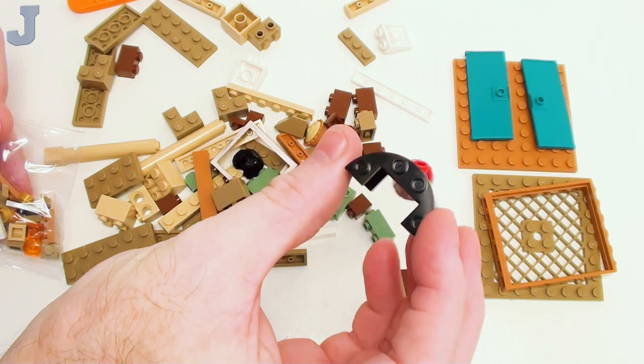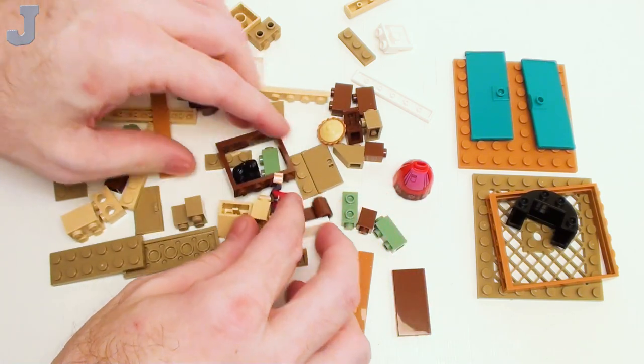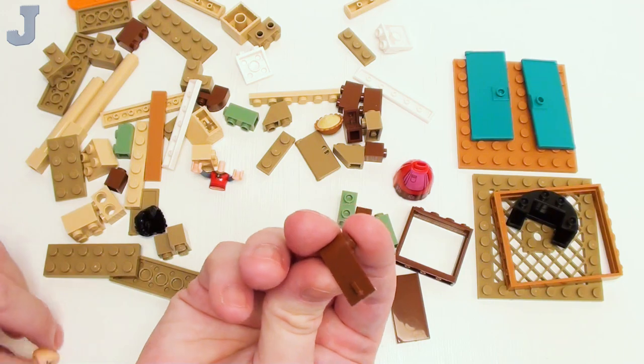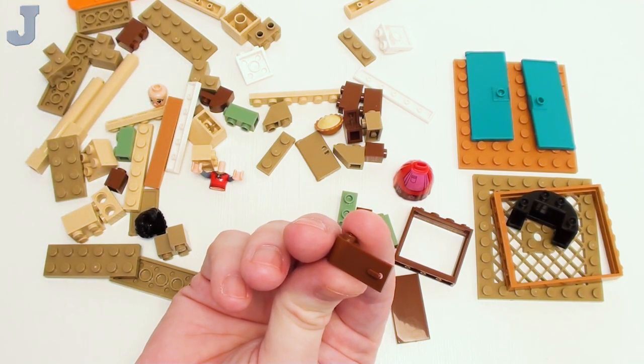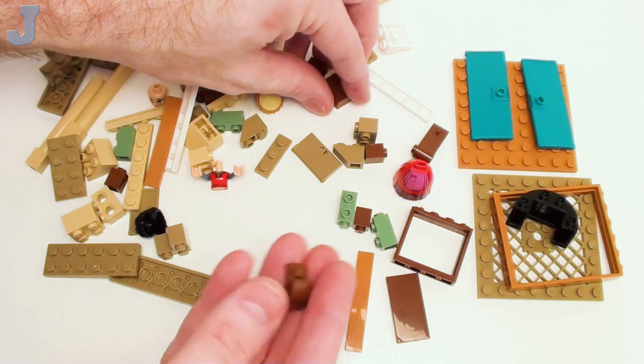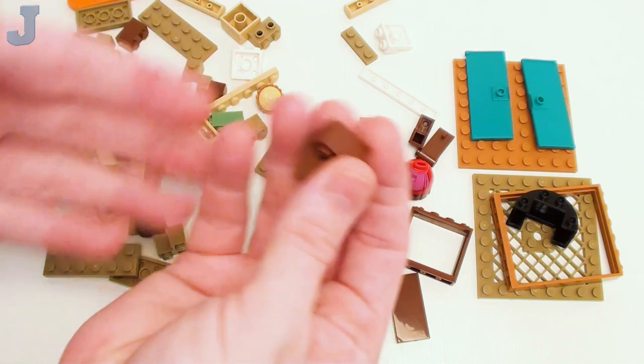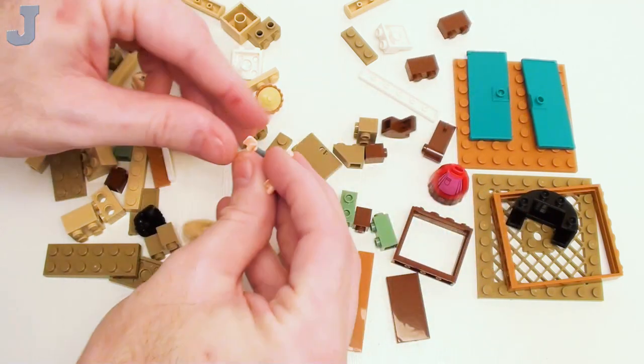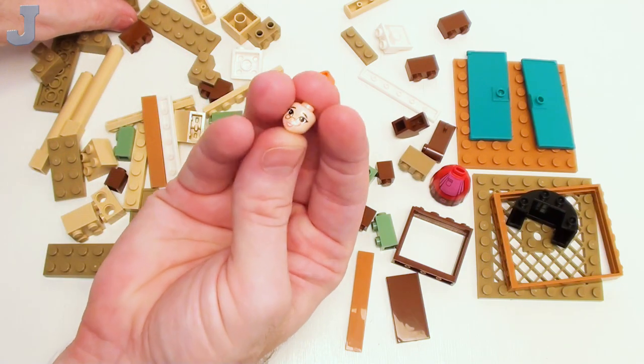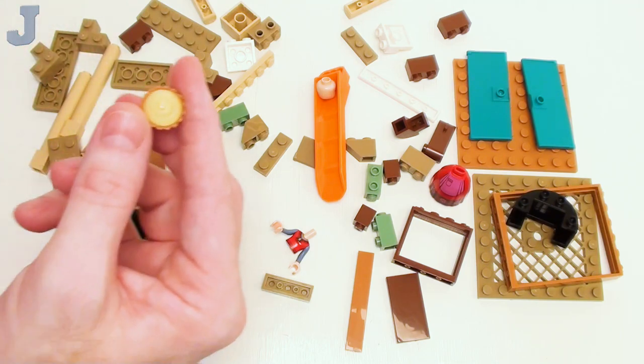And a 2x4 flat tile. A 2x4x2 half-round wall element. We've got some 1x3x4 window elements. And a brown left-handed car door. I've never seen those in a round before. And a 1x1 brick with bow. Some 1x2 bricks. We've got some hearts for the mini-doll. There's the brick separator. There's a head.